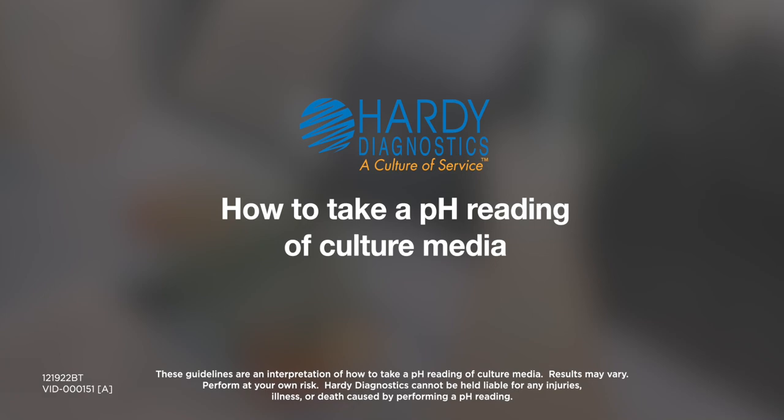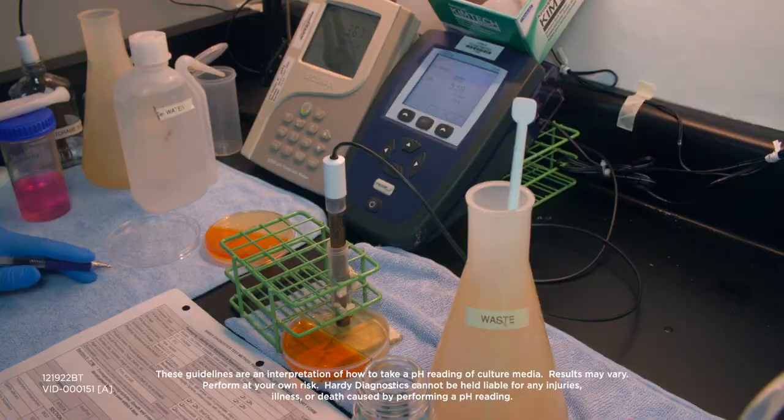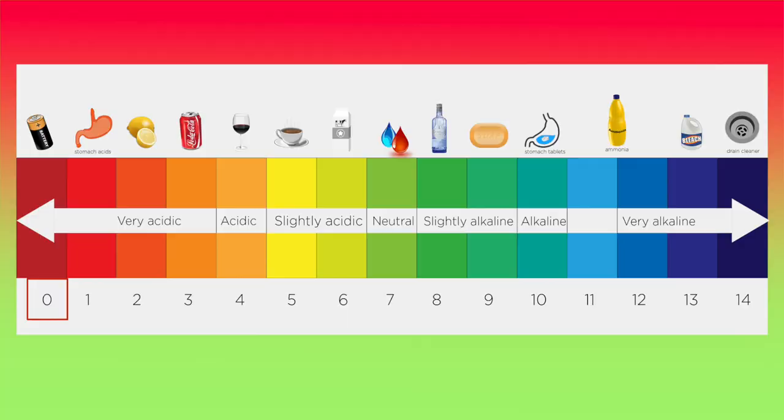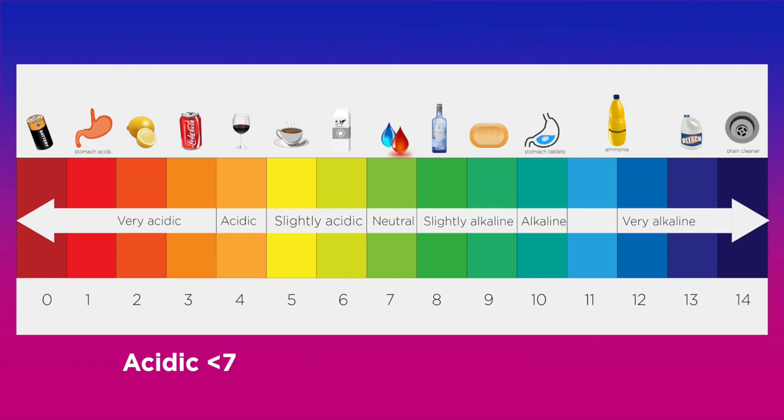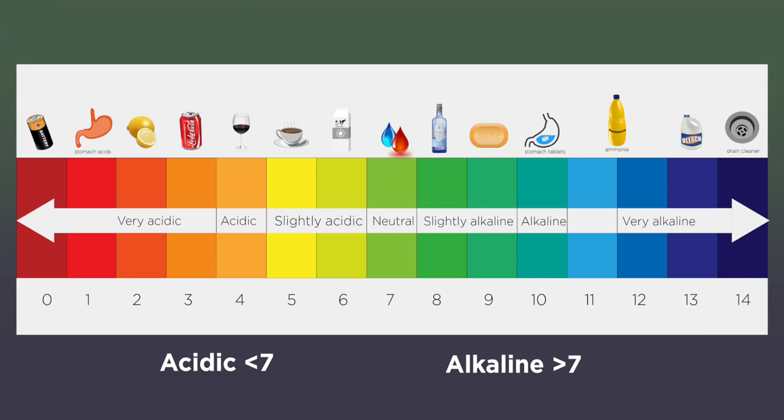pH is the quantitative measurement of the acidity or basic nature of a liquid solution. The pH scale ranges from 0 to 14, and 7 is considered neutral. A pH reading of less than 7 is considered acidic, and a reading greater than 7 is considered basic or alkaline.